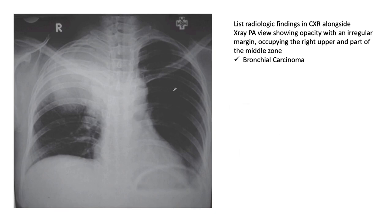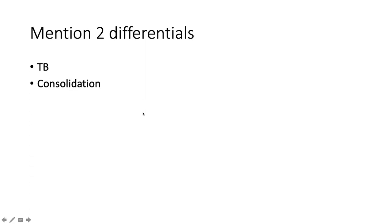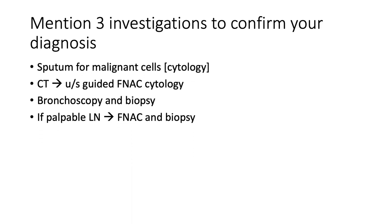Here we see a PA view showing opacity with an irregular margin occupying the right upper and part of the middle zone — this is most likely a bronchial carcinoma, though differentials include TB and consolidation. Three investigations to confirm the diagnosis: sputum for cytology to detect malignant cells; a CT of the chest with a view to CT-guided fine needle aspiration cytology performed by cardiothoracics; and bronchoscopy with biopsy of the lesion. If there are palpable peripheral lymph nodes, perform FNAC and biopsy.